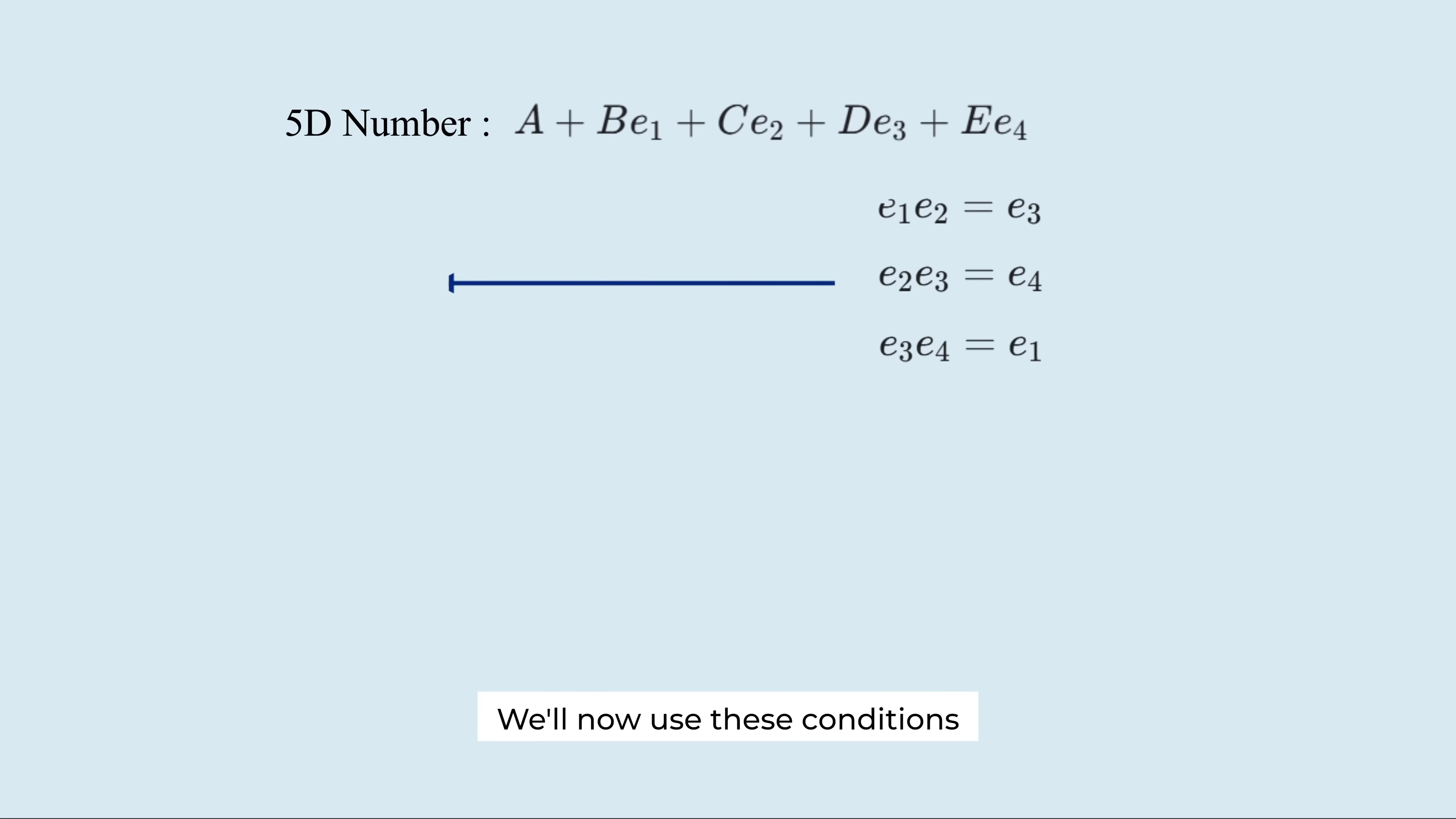We will now use these conditions to determine the value of E3. Along the way, we will see that a contradiction inevitably appears. First, take this equation. Multiply both sides by E3. Assuming the associative law. We get E3 times E1 equals E4.